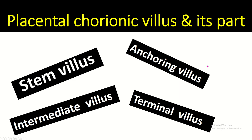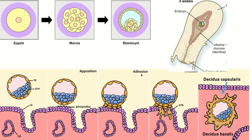Placental chorionic villi and its parts. The zygote typically divides and increases cell number, forming a structure known as the morula. This is then converted into a blastocyst, which contains two types of cells: the embryoblast, which forms the embryo, and the trophoblast, which forms the fetal membrane.